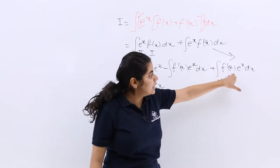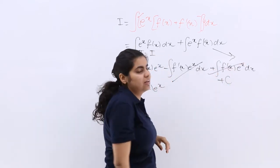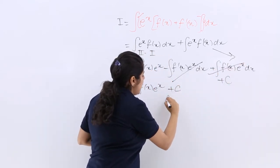And these two things are the same. The only difference is between minus and plus sign, so they cancel each other. So f(x)e^x plus C, and that is the answer.